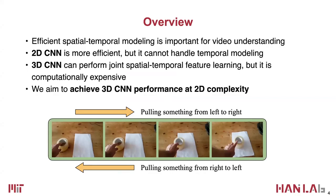Traditionally there are two ways to process video. One is to apply a 2D CNN to each frame — this is efficient and reuses existing image recognition networks, but it cannot handle temporal modeling. A simple example: four frames in different time orders give different predictions. The other approach is 3D CNN, which performs joint spatial-temporal feature learning by convolving along both spatial and temporal dimensions. It works well but is computationally expensive. The goal is to achieve 3D CNN-level performance while using only 2D complexity.